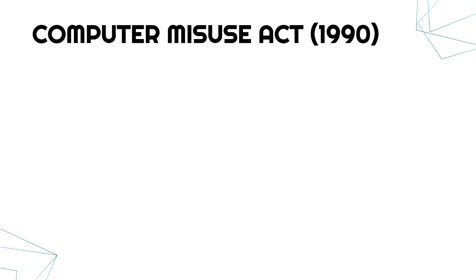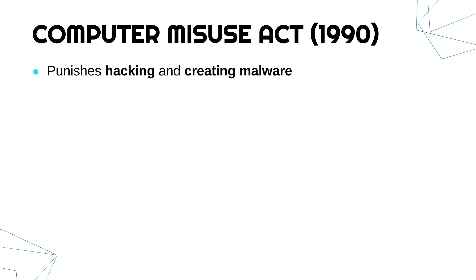The first law, which applies to individuals, is the Computer Misuse Act, which is quite old now — it was first enacted back in 1990. It's quite controversial that it's so old. This law punishes hacking and creating malware. It's controversial partly because back in 1990, hackers and malware creators were very different to what they are right now — it's much more advanced now than it was 30 years ago.